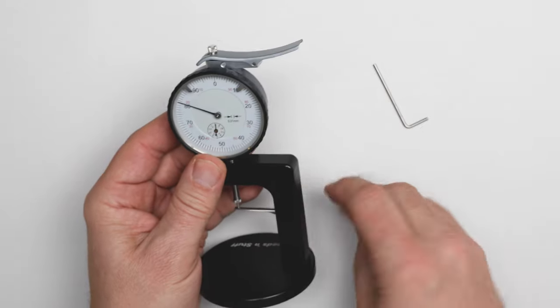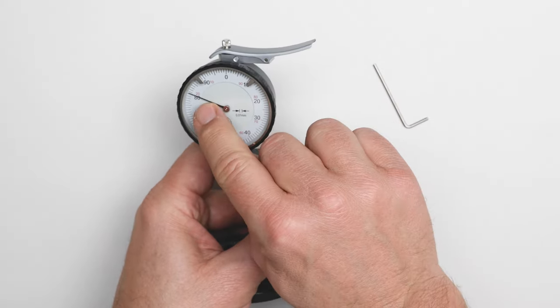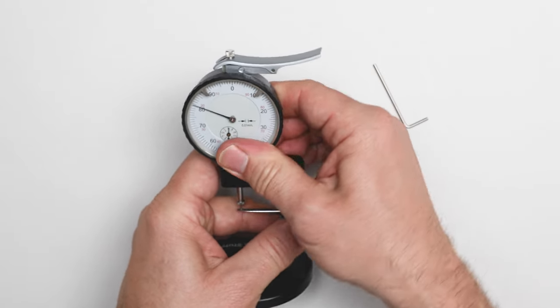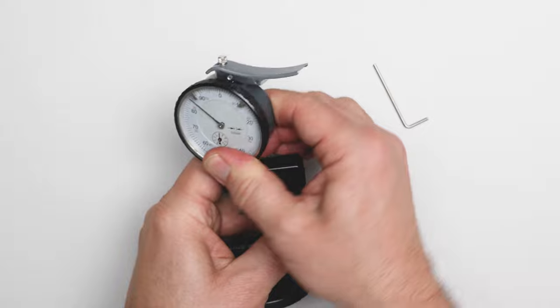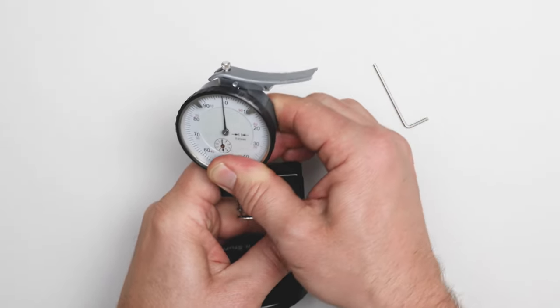And now we do the final adjustments because I want the long pointer on zero and the short pointer on zero too. Just move it a little up and down.